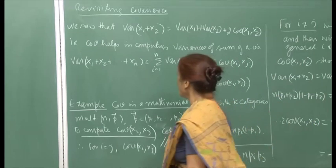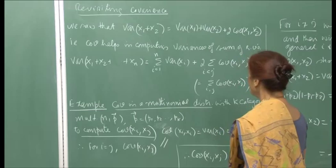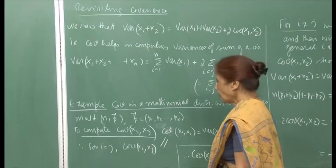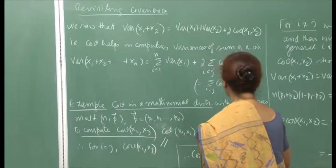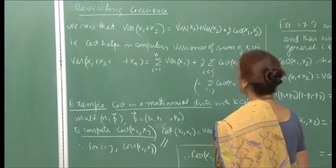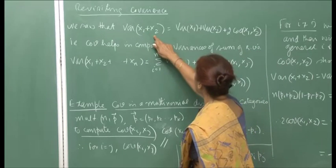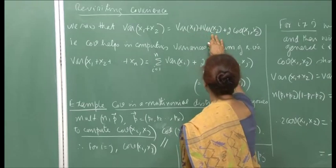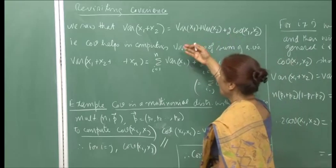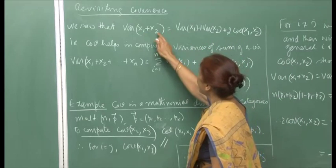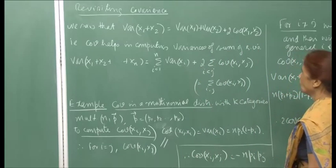In the last lecture, I defined covariance and correlation, showing that correlation is the dimensionless version of covariance. Now, here are a few more uses of covariance. When you write Var(X₁ + X₂), the formula is Var(X₁) + Var(X₂) + 2·Cov(X₁, X₂). So in general, if X₁ and X₂ are not independent, I need Cov(X₁, X₂) to compute the variance of their sum.